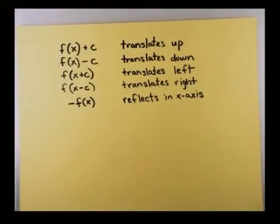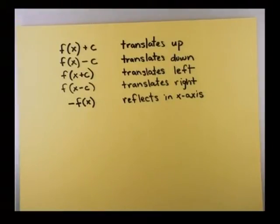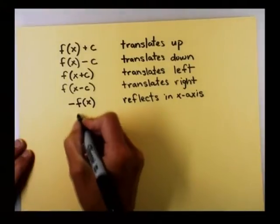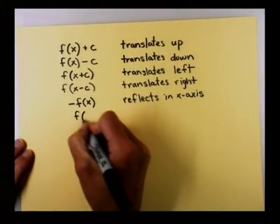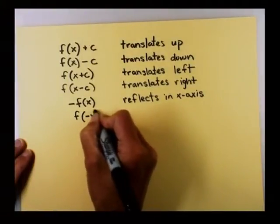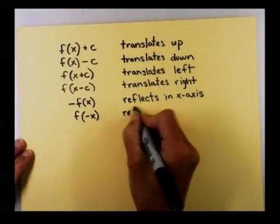And what we didn't do with our x-squared, just because it wouldn't show up on an x-squared, was we didn't look to see how to reflect it over the y-axis. I'm going to go ahead and give you that one anyway. We'll reflect.